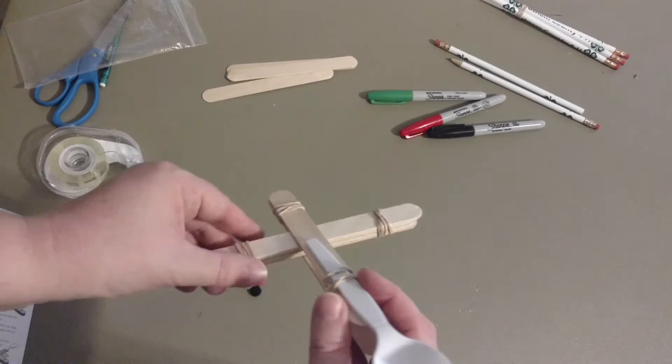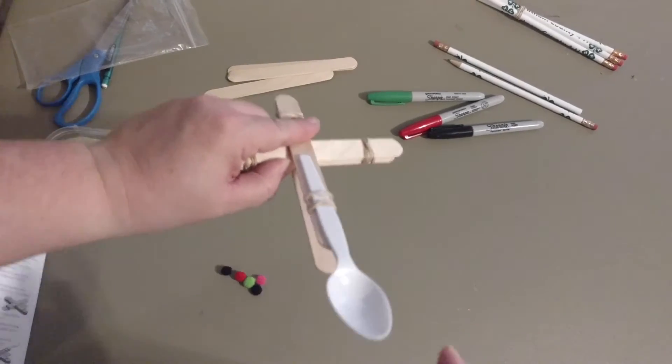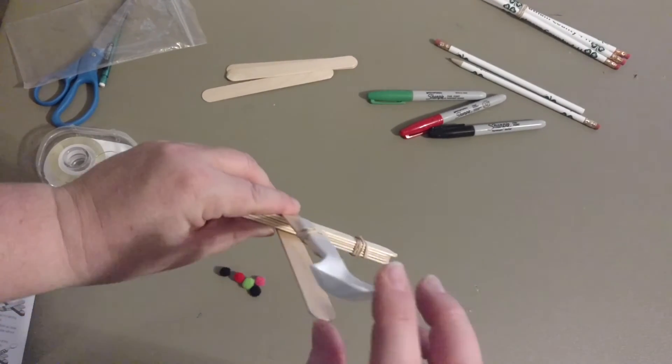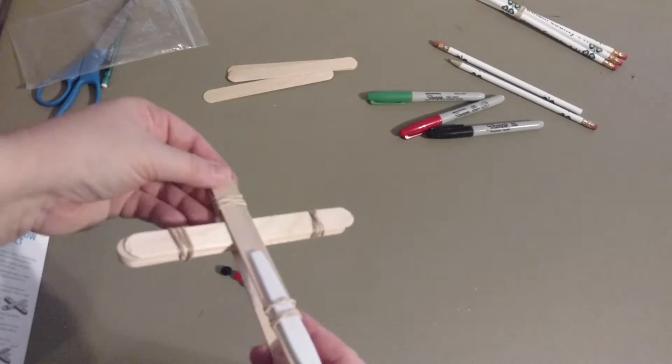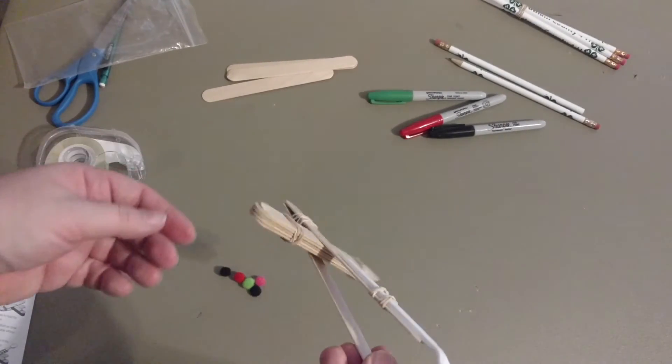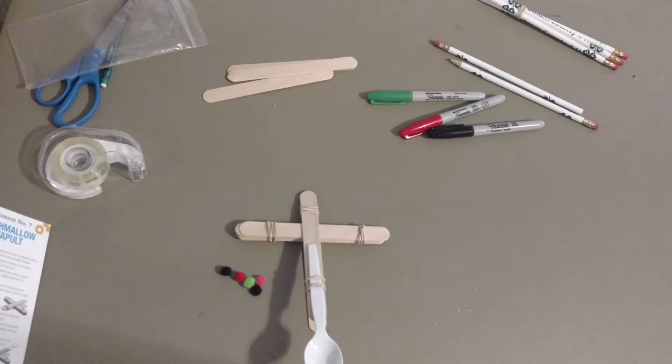This is a good demonstration of potential energy when I have my little launcher there in the spoon, to kinetic when I flip it here in just a minute and hopefully hit the bullseye. The rubber bands give us a little bit of elastic potential because there is a little bit of a give to it with our rubber bands and our popsicle sticks.